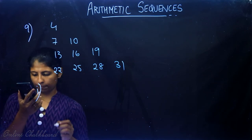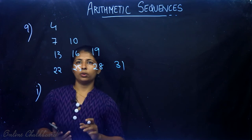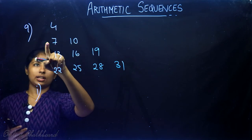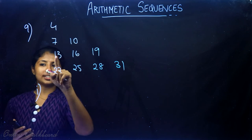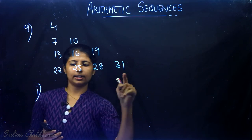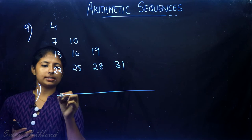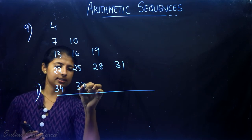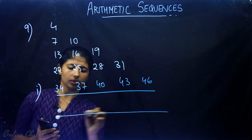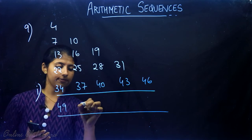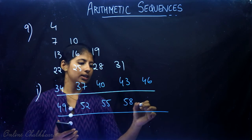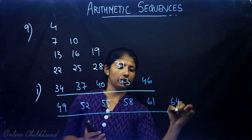Write the next two lines of the pattern. The sequence increases by 3 each time: 4+3=7, 7+3=10, and so on. Continuing: 31+3=34, 34+3=37, 37+3=40, 40+3=43, 43+3=46, 46+3=49, 49+3=52, 52+3=55, 55+3=58, 58+3=61, 61+3=64. These are the next two lines.